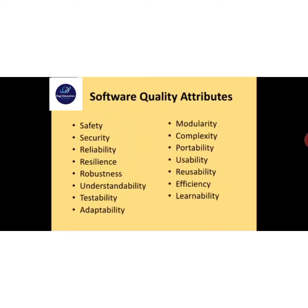Software quality attributes include: one, Safety; two, Security; three, Reliability; four, Resilience; five, Robustness; also Security, Reliability, and Resilience.